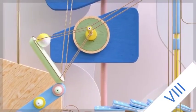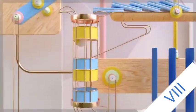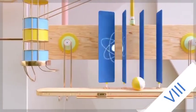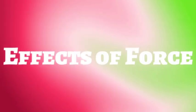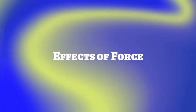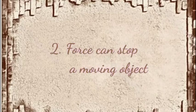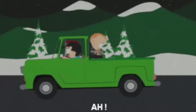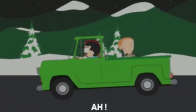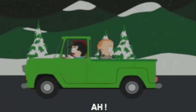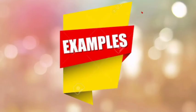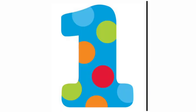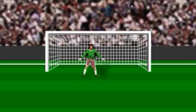Let us continue with the topic: effects of force. The second effect of force is that force can stop a moving object. We can stop a moving object by applying a force. For example, when a football player kicks the football towards the goal, the goalkeeper applies force to stop the ball.